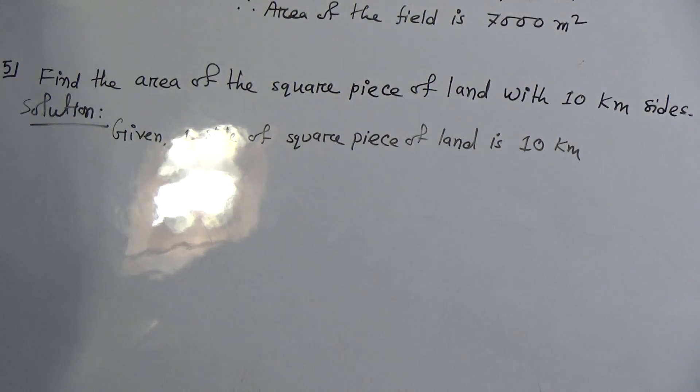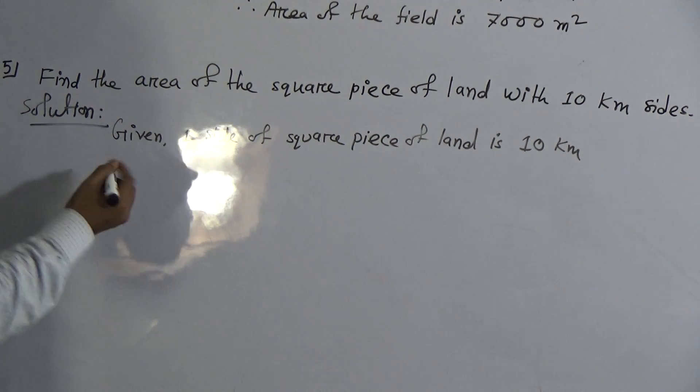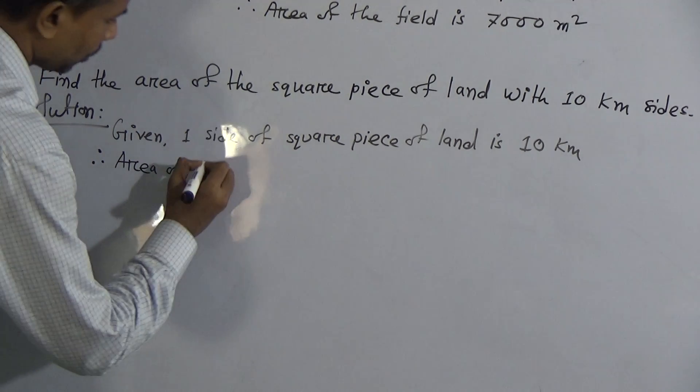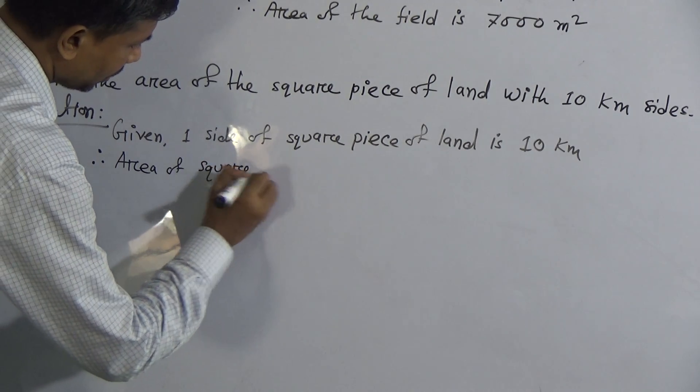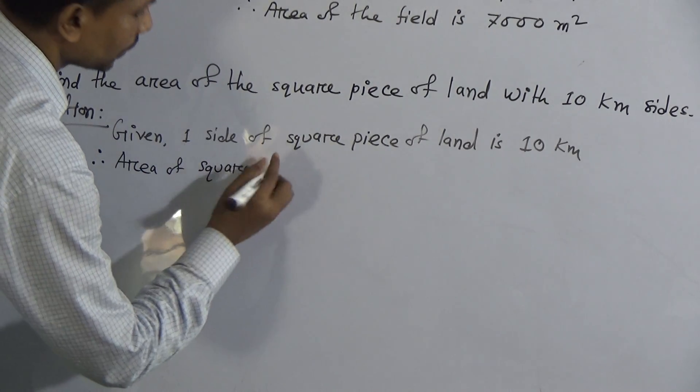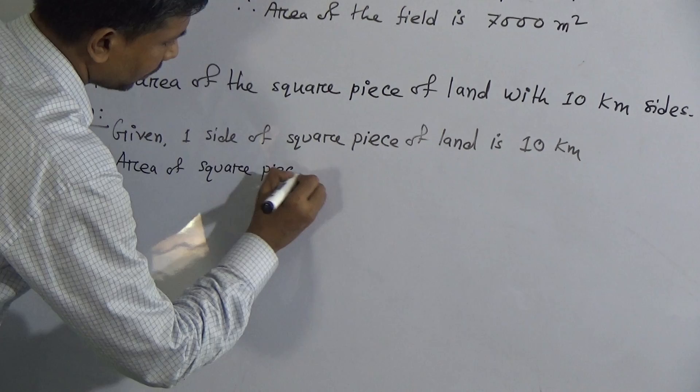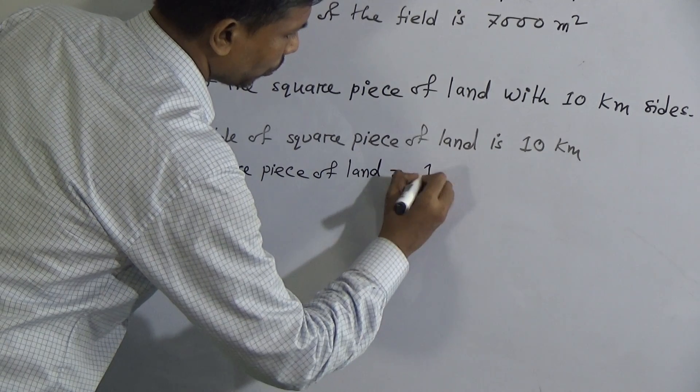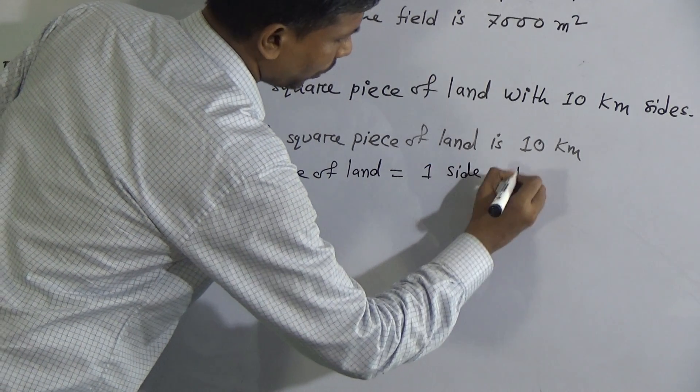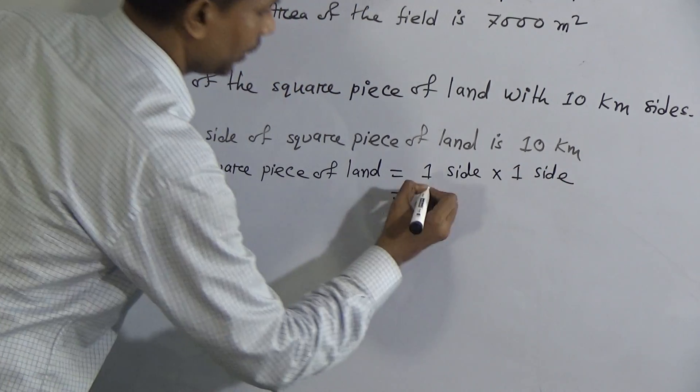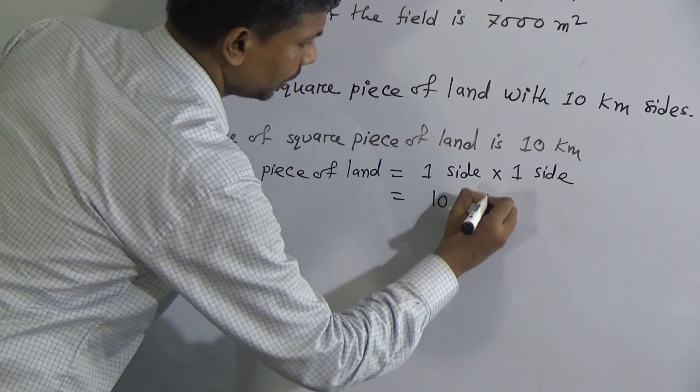Given one side of the square piece of land is 10 kilometer, therefore, area of the square piece of land equal to one side into one side. This is equal to 10 kilometer into 10 kilometer, kilometer square, that means square kilometer.